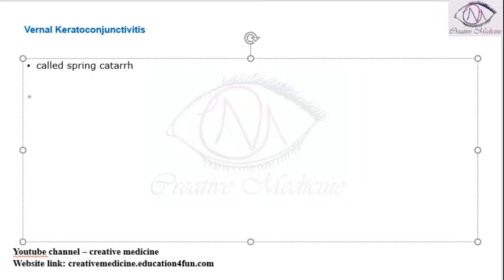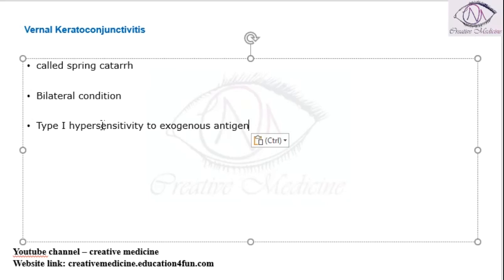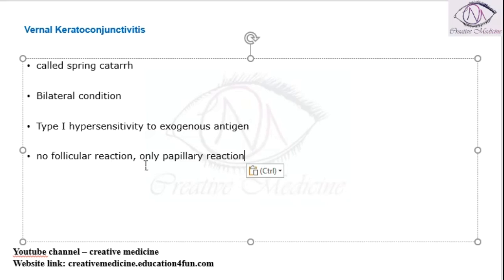Vernal keratoconjunctivitis is a bilateral condition associated with a type 1 hypersensitivity reaction to an exogenous antigen. It has no follicular reaction — only a papillary reaction is seen.